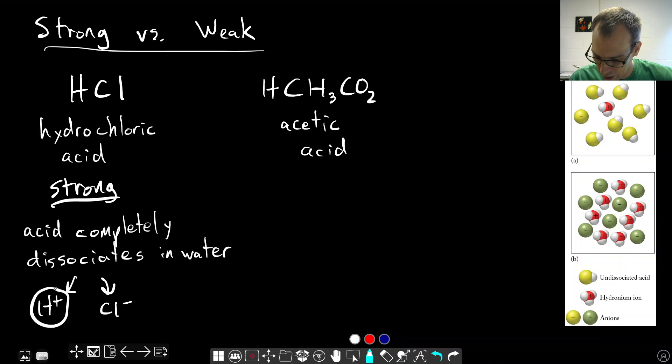In terms of this picture that we have over here on the right, our strong acid is represented by the picture on the bottom here. You can see that we have, we've left out all the water except for the water that's become hydronium ions. We have these negative ions here, these represent the chloride ions, and these are the hydronium ions, and there's no HCl that's still left together.